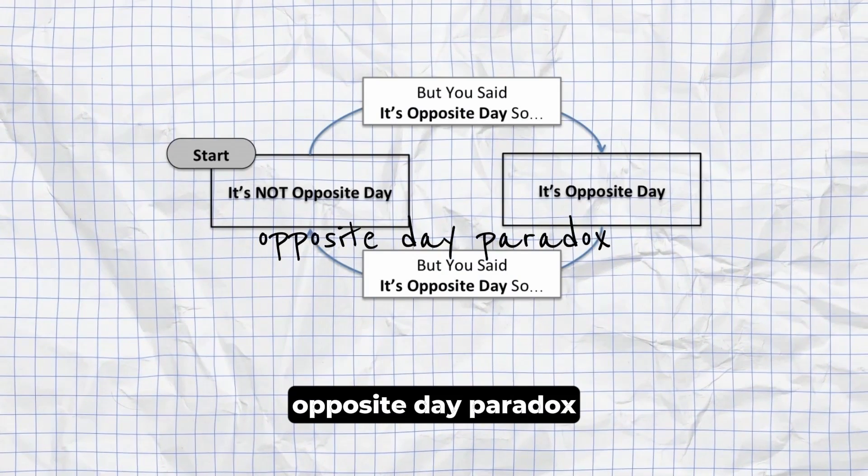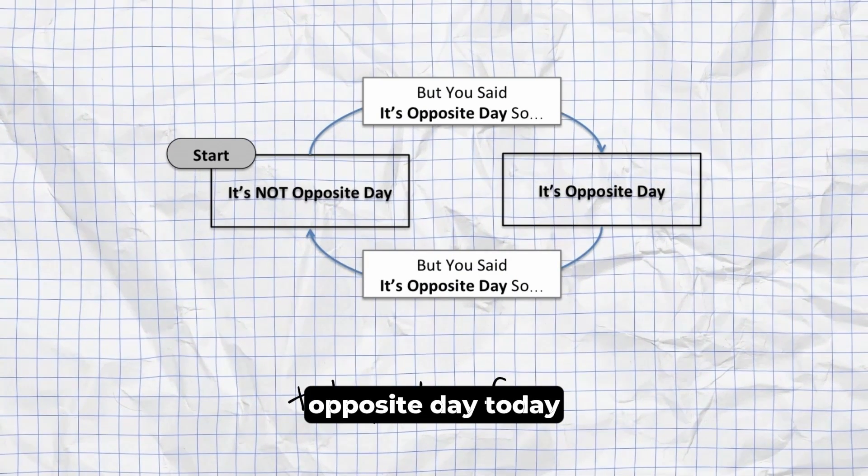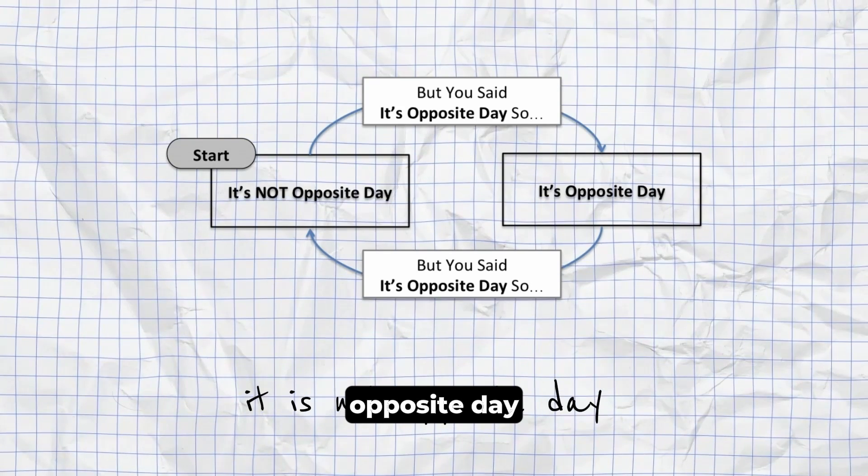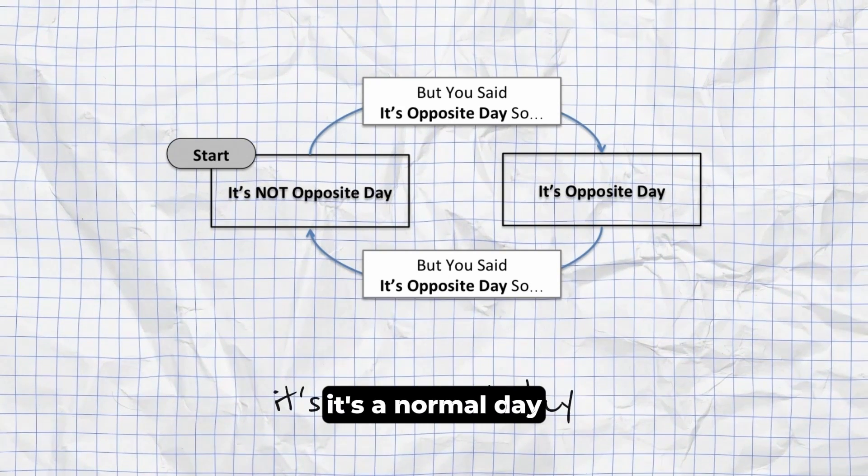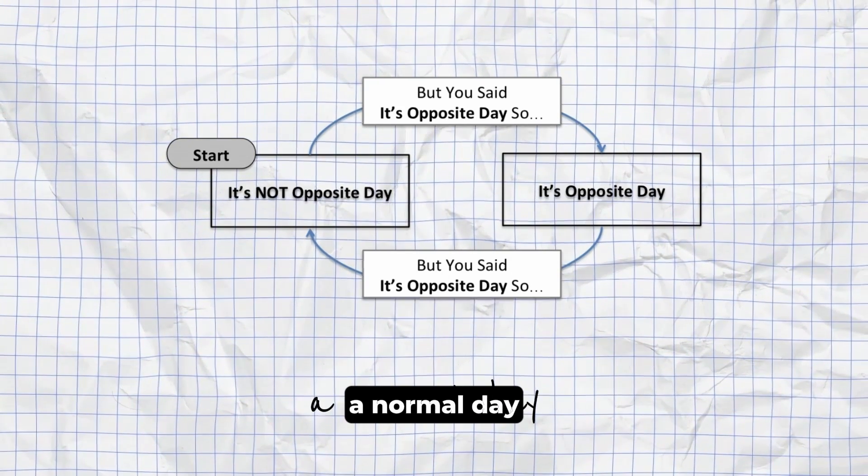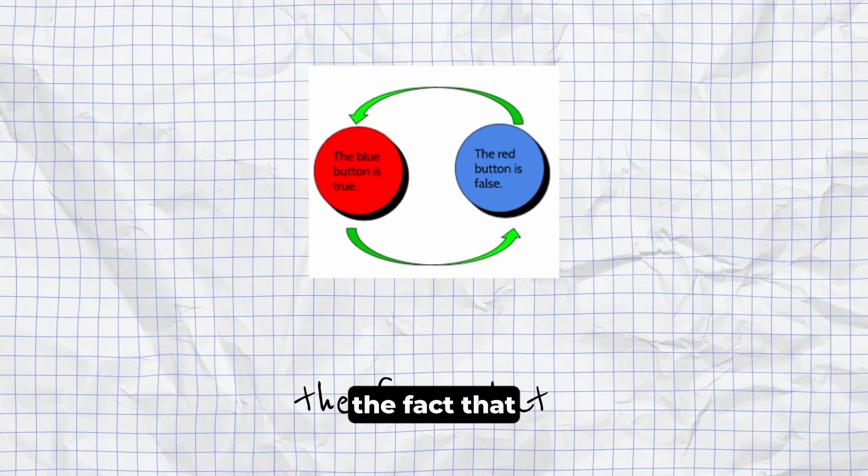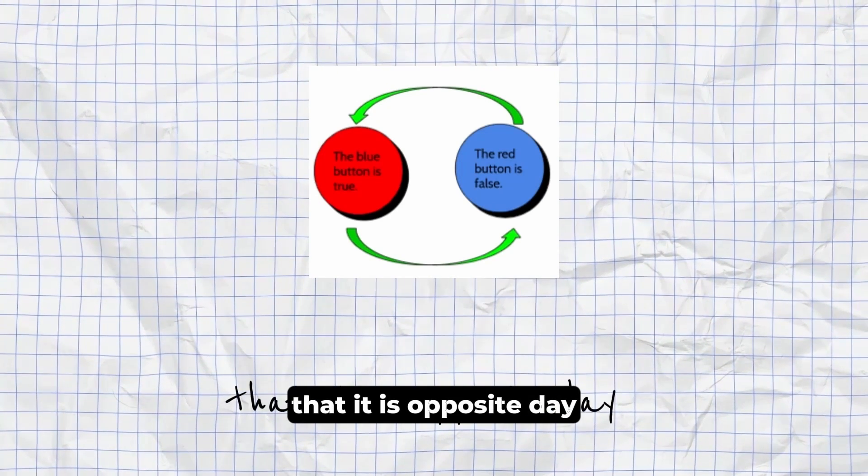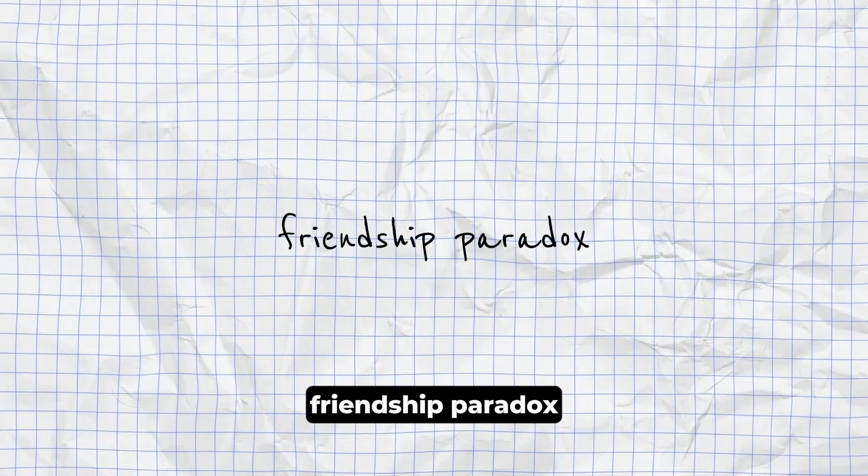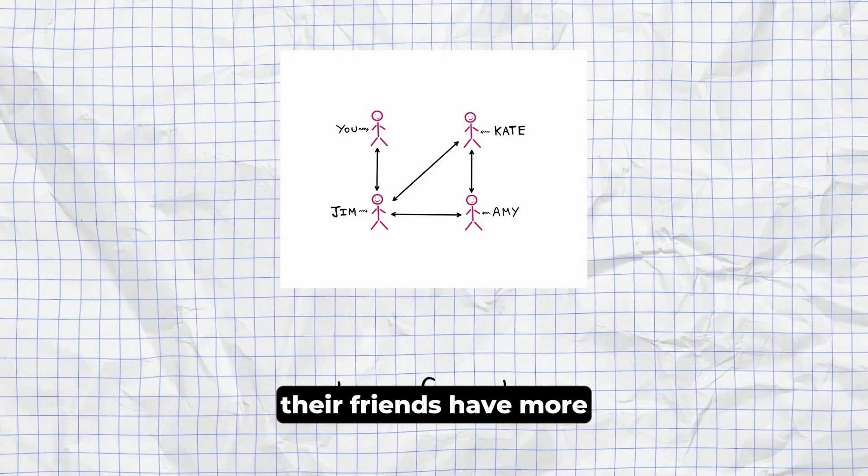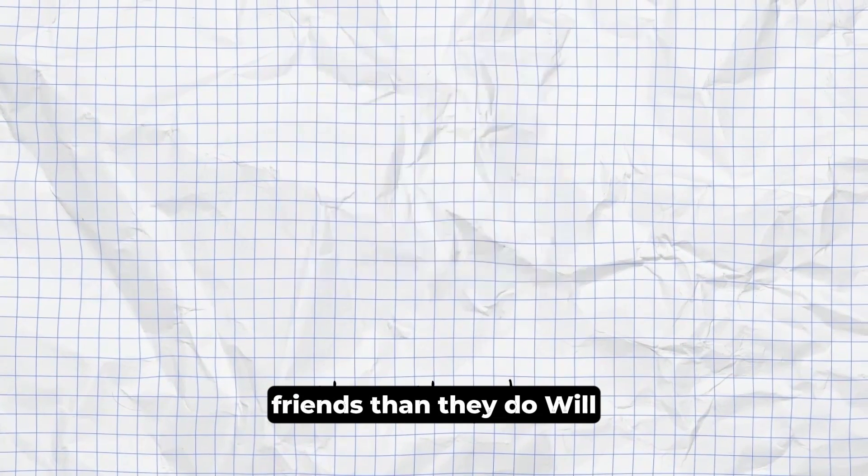Opposite Day Paradox. The phrase, it is opposite day today. Therefore, it is not opposite day. But if you say it's a normal day, it will be considered a normal day, which contradicts the fact that as previously has been stated that it is opposite day. Friendship Paradox. For almost everyone, their friends have more friends than they do.